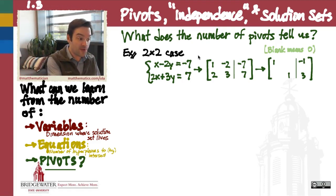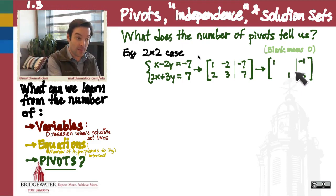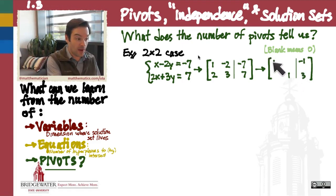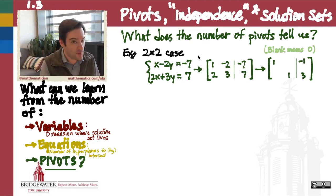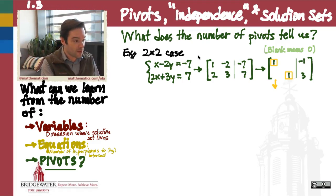If I do that all the way to its end conclusion, I'm going to end up in this example with a row reduced matrix which, on the left-hand side of the augmentation bar, has a 1 on each of the diagonal entries and 0s everywhere else. I'll use blank spaces in my augmented matrix to indicate where the 0s are, just to make it easier to read.